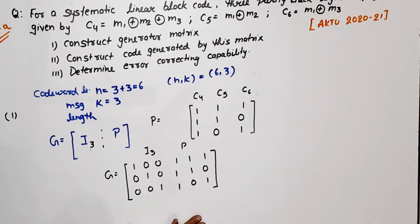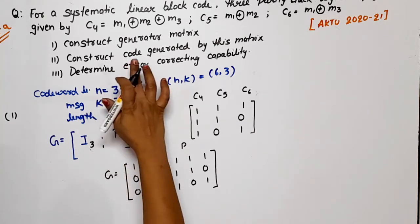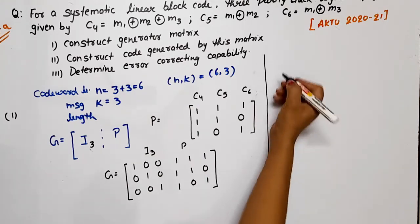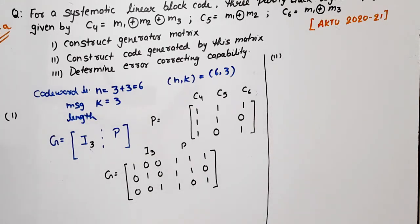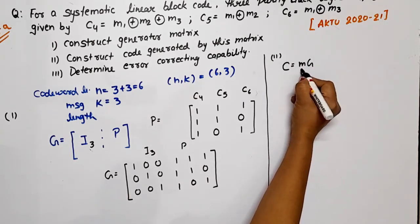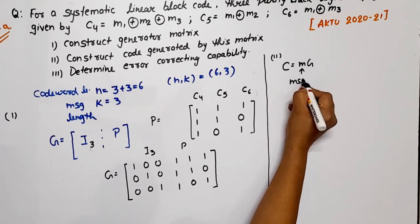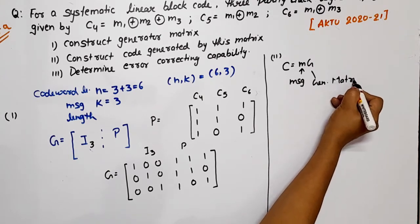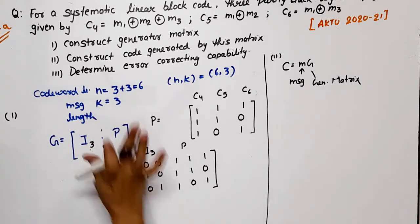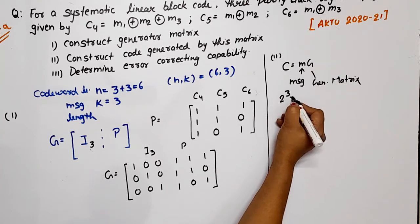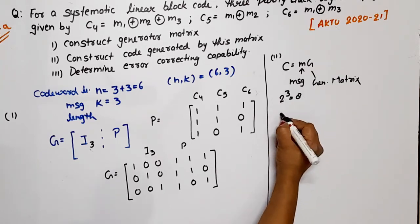The first part is done. Now the next part is to construct the code generated by this matrix. The code C is given by C = M·G, where M is the message and G is the generator matrix. Since the message length is 3, the number of possible messages is 2^3 = 8. So I will write out all 8 possible messages.